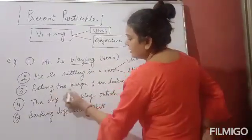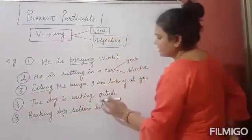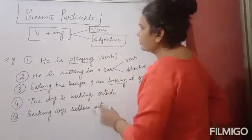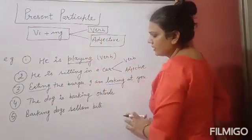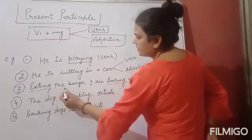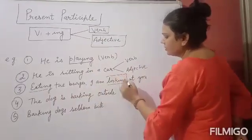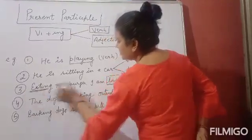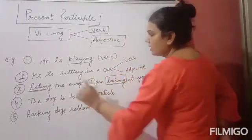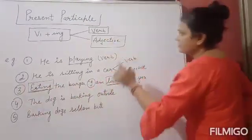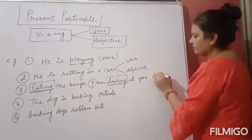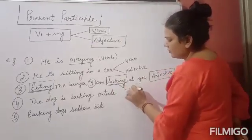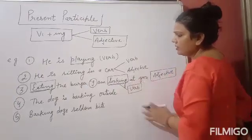In the third sentence: 'Eating the burger, I am looking at you.' Two verbs are used in present participle here — 'eating' and 'looking.' The verb 'looking' is showing action, but the verb 'eating' is giving extra information about 'I.' So in this sentence, 'eating' is used as an adjective and 'looking' is used as a verb — and 'looking' is also the main verb.